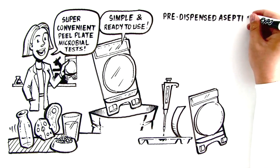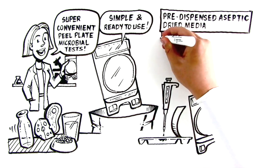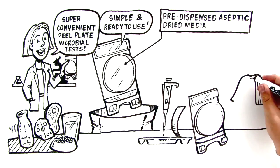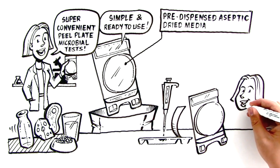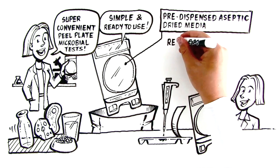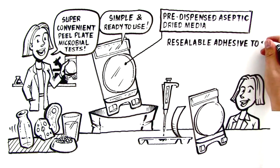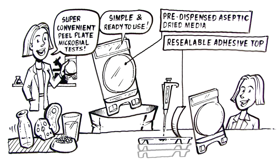Predispensed aseptic dried media comes in a three-dimensional plastic circle which contains and automatically diffuses samples without a spreading device. Re-seal the adhesive top and stack up to 20. Air circulates freely and there's zero cross-contamination.